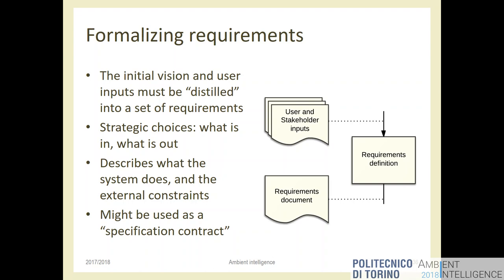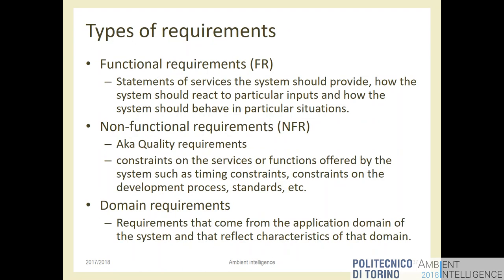There are two main categories of requirements. The easiest are called functional requirements — something that the system needs to do. An operation, an action, a high-level function: the system should detect the presence of users, the system should send an email at the end of the month with statistics, and so on.